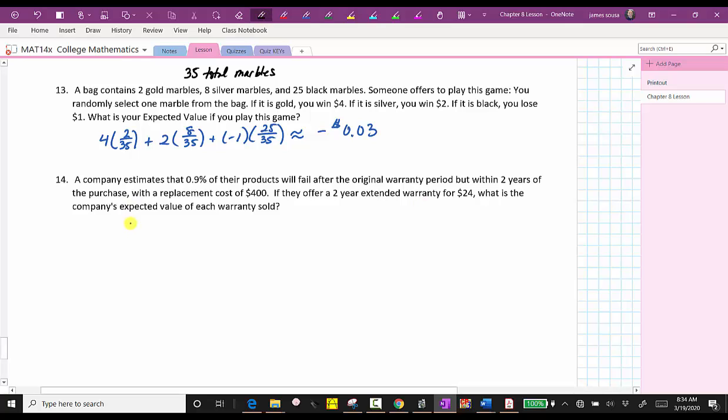So the first thing to recognize here is the probability the product will fail is equal to 0.9%, which must be expressed as a decimal, which is 0.009, which means the probability of no failure is equal to one minus the probability of failure, which is one minus 0.009, which is equal to 0.991. We need both of these probabilities to determine the expected value.